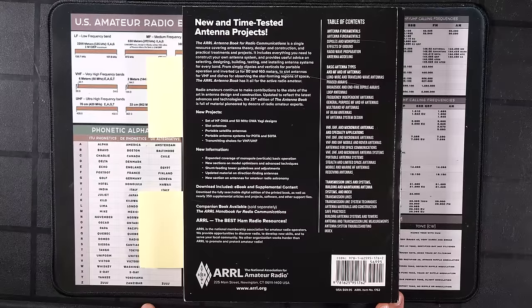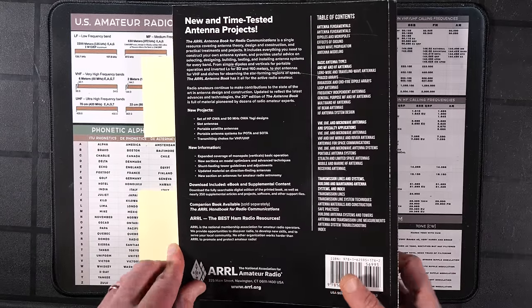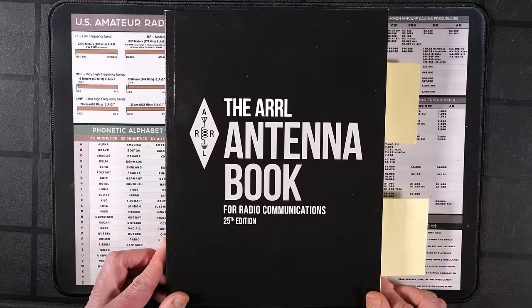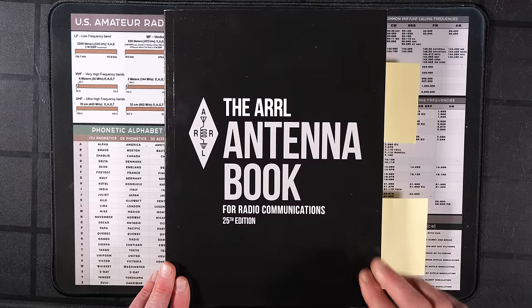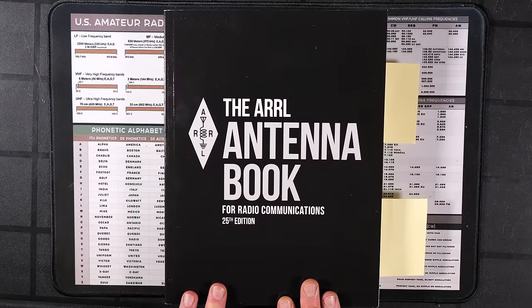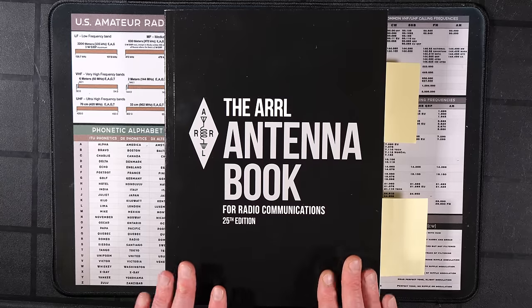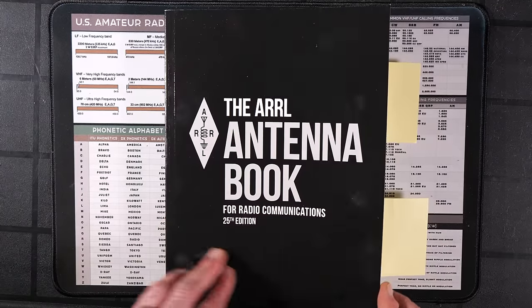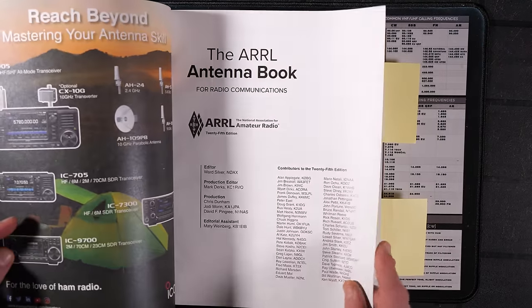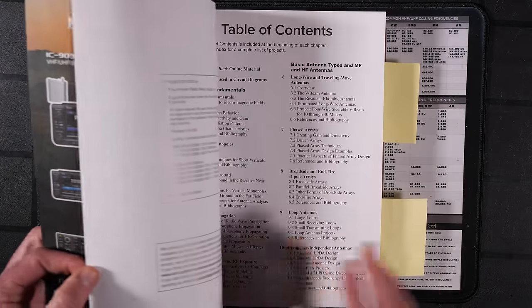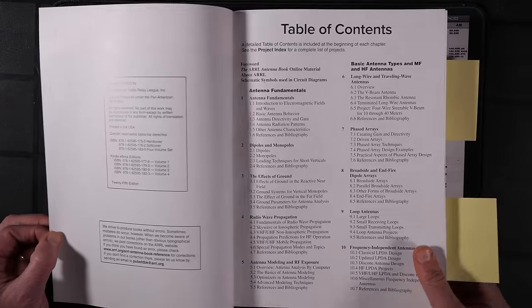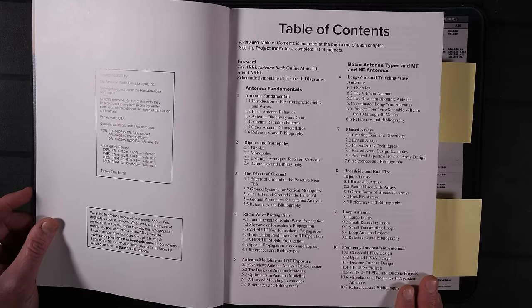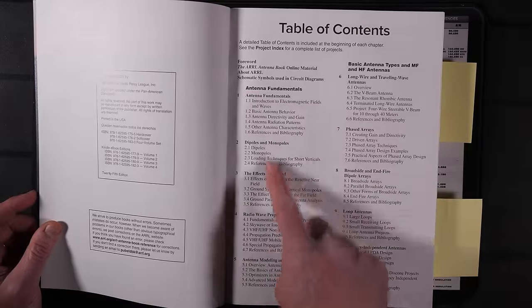Also, another nice feature of the ARRL Antenna book is it comes with a lot of downloadable content. You can download a PDF copy of this book so that you can read it on your favorite mobile device. You can also download many of the projects. There's a lot of projects in this book, but the downloadable content gives you just access to a lot more of those projects, including more detailed plans that you can't quite fit into this guide. We're going to take a quick look at the table of contents because I think this is kind of important.